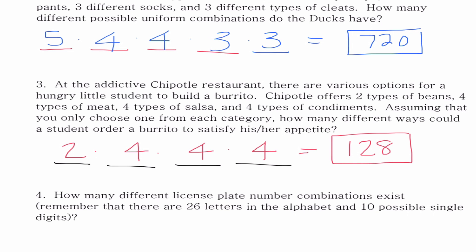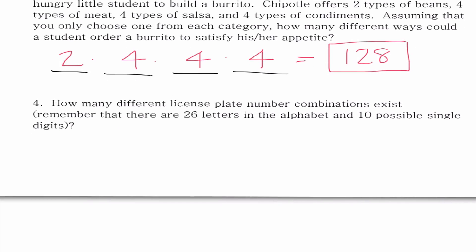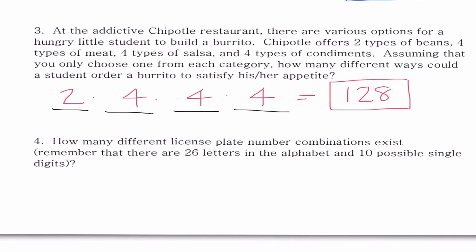There's a lot of problems that are going to be on that level of difficulty where they're just giving us the values and we're multiplying them together. Then there's going to be some other problems where we need to think a little bit more. Number four, it says how many different license plate number combinations exist? Remember that there are 26 letters in the alphabet and 10 possible single digits because we have one through nine and zero.